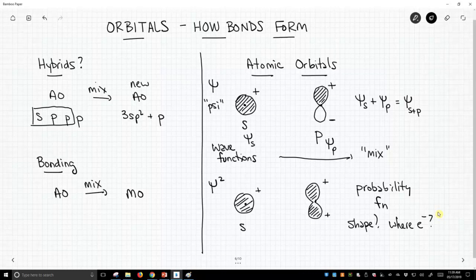So when we mix our orbitals, when we're talking about bonding, we need to use the wave function, the mathematical function. Once we square the function, we can address things. What is the shape of the new orbital we've made? Or where are the electrons in the orbital that we made? These are ways that we invoke atomic orbitals and molecular orbitals to create bonds.